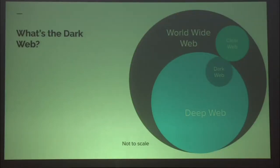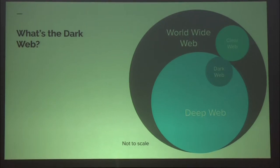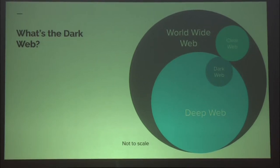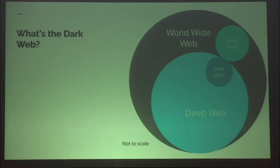Just to make sure we're all on the same page, let's talk about what the dark web actually is. This image is obviously not to scale, but it represents the internet or the World Wide Web. The World Wide Web has two major components. The clear web is the internet we use every day — BuzzFeed is an example. You can type in a URL and go there without any special software or password.